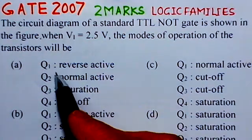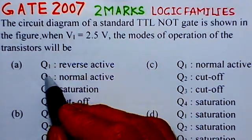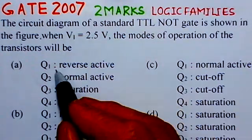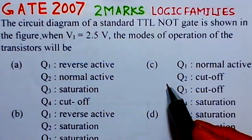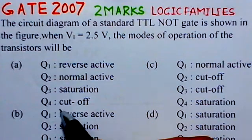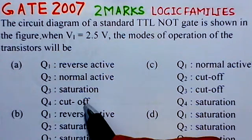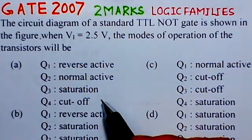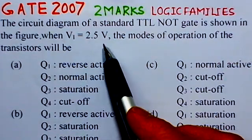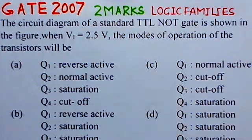Every option has four transistors Q1, Q2, Q3, and Q4, and we have to find the mode of operation of each. Here the circuit considered is a TTL NOT gate and VI is 2.5 volts, meaning a high input is applied to this NOT gate.